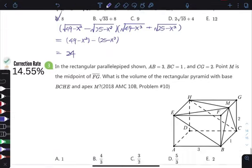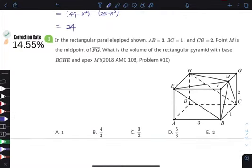All right, let's go to the last one. In a rectangular parallelepiped shown, AB is 3, BC is 1, CG is 2. Point M is the midpoint of FG. What is the volume of this rectangular pyramid with base BCHE and apex M?